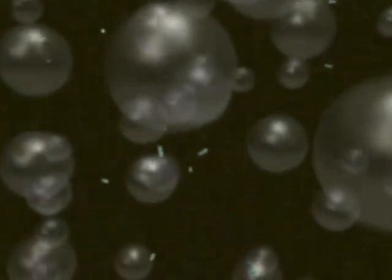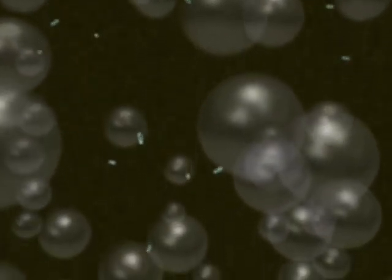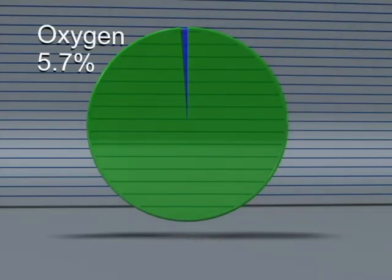Since bubbles of this size quickly rise to the surface, the aerobic bacteria in the water are only left with about 5.7% of the oxygen that had been introduced into the water. The rest of the oxygen escapes back into the atmosphere when the bubble reaches the surface of the water.